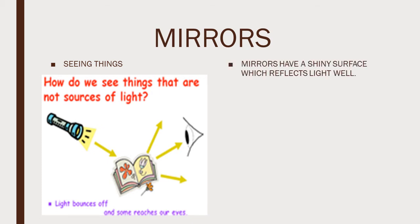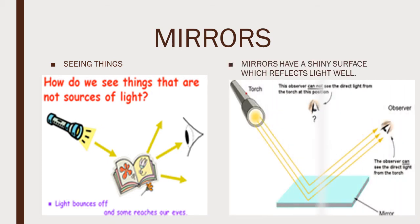Mirrors have a shiny surface which reflects light well. The term reflects also means to bounce off. In the diagram that we have here, we have got a mirror, a flashlight, and an eye.